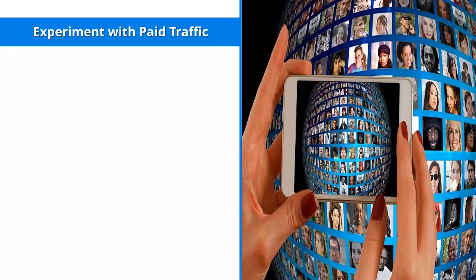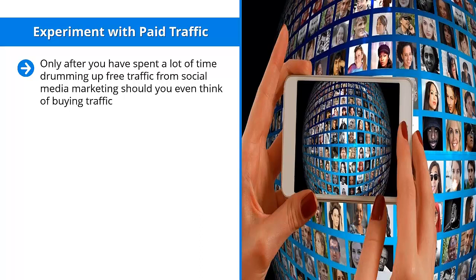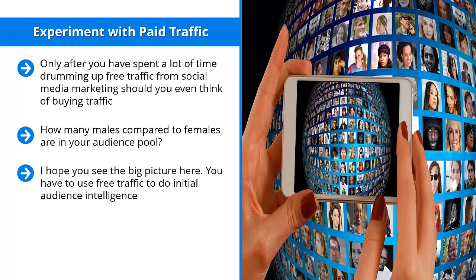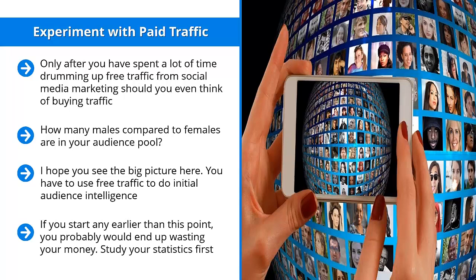Experiment with paid traffic only after you have spent a lot of time building free traffic from social media marketing. In the beginning, you don't know when your audience will be reading your content, what their demographic breakdown looks like, how many males versus females are in your audience, what types of content they prefer, their age ranges, or where they're located. You have to use free traffic to gather initial audience intelligence. Once you have those insights, you can start paying for Facebook ads and other platform ads. Study your statistics first, pay close attention to audience patterns, then take out ads based on those patterns.